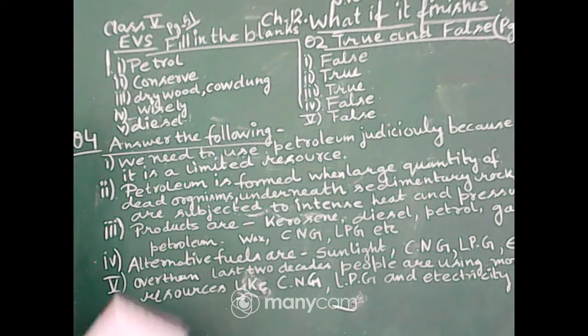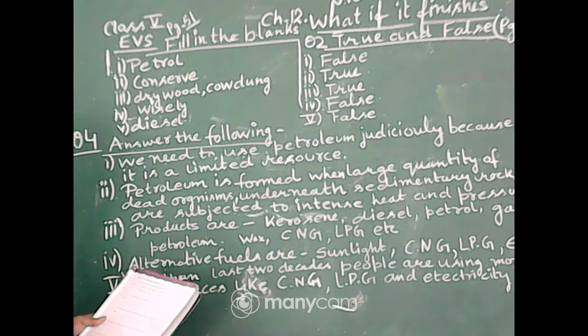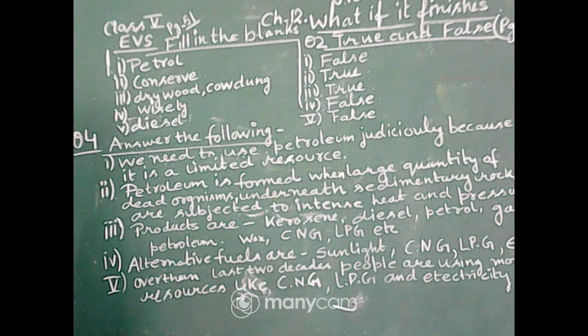And the fourth question is, what are some alternative fuels used in vehicles in present time? So, alternative fuels which we are used, they are sunlight, CNG, LPG, and electricity.